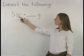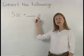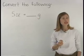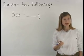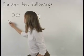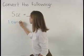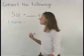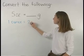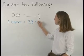To convert five ounces into grams, we need to begin with the conversion factor for ounces and grams, which is one ounce is equal to approximately 28.4 grams.